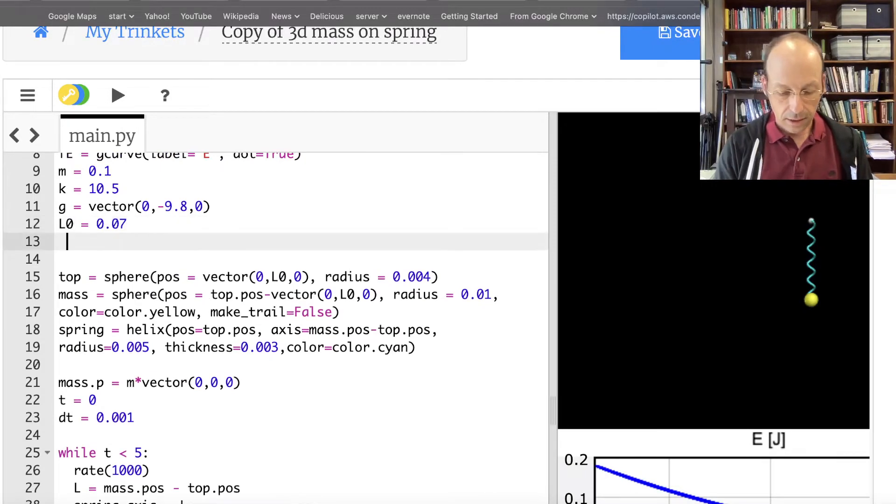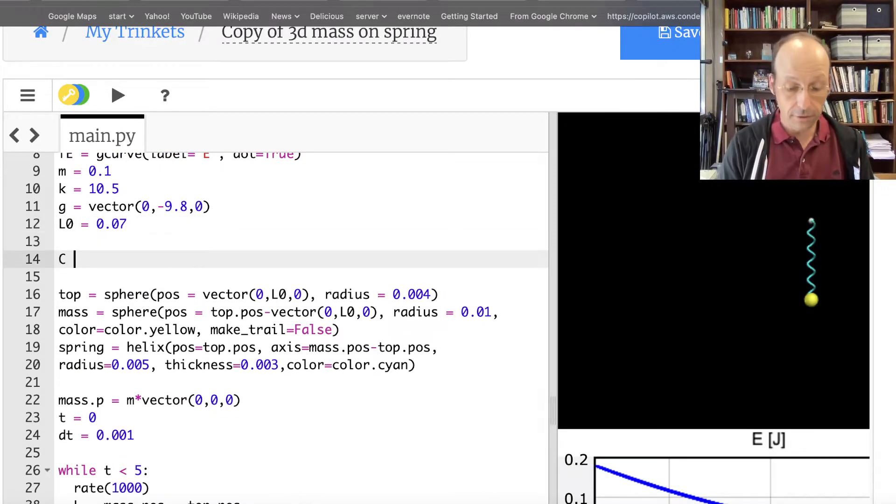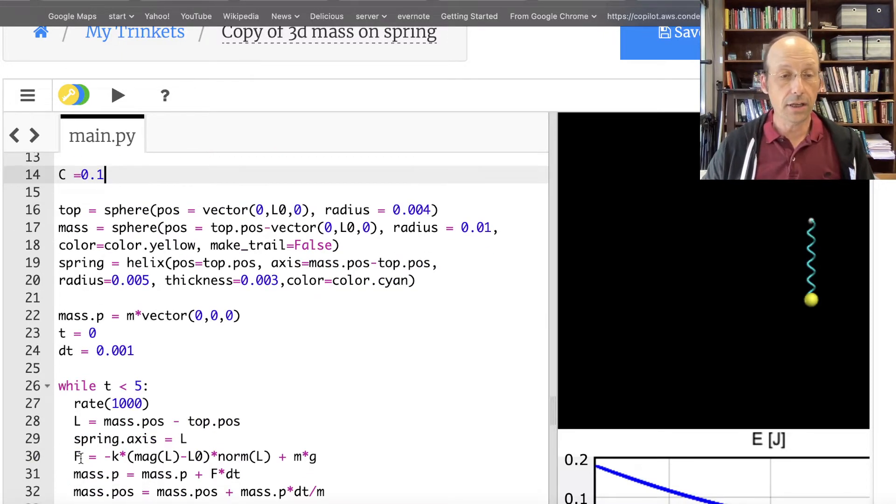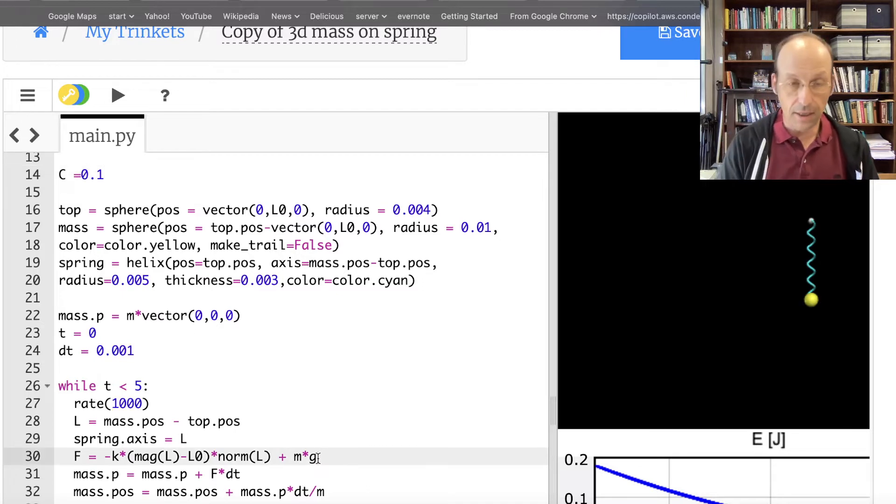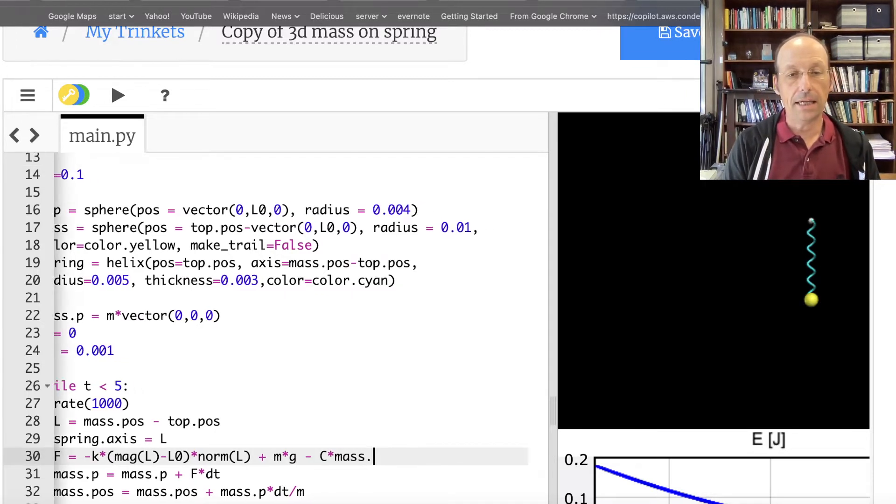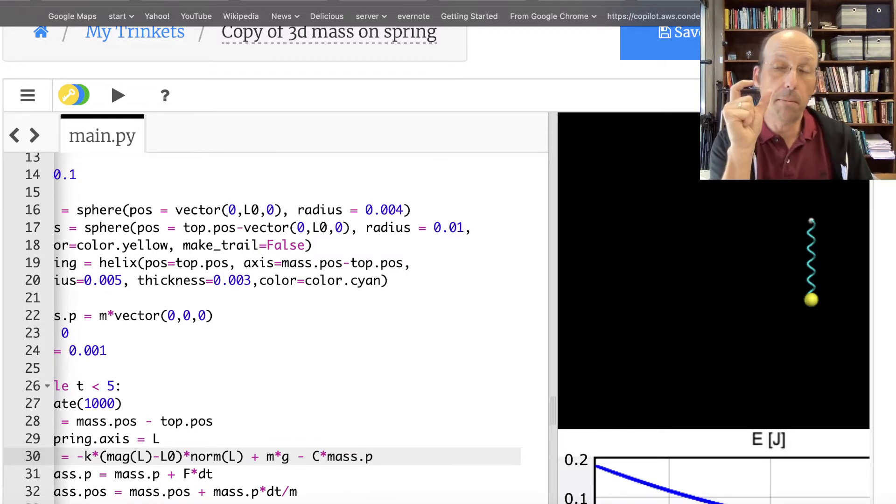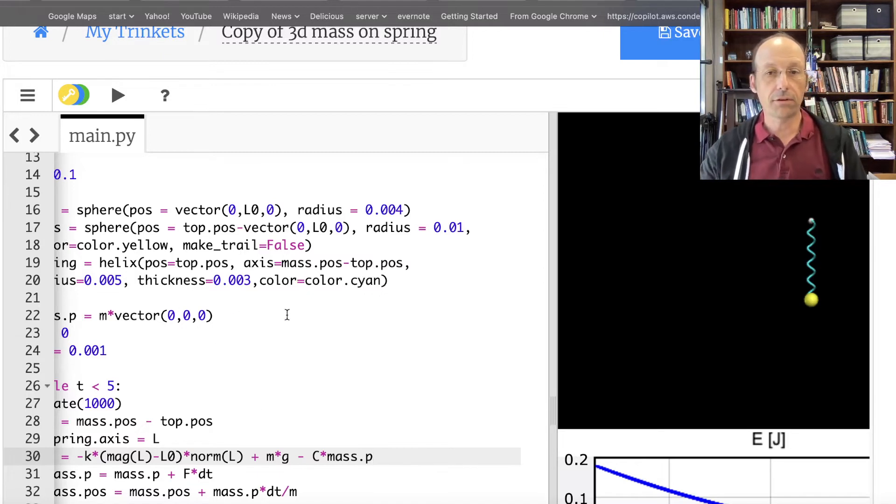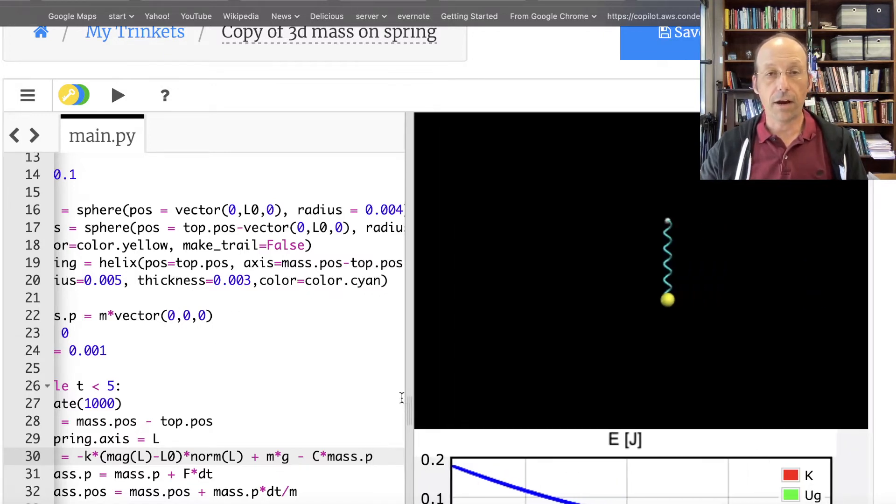So up here I'm going to say some constant let's say I'm picking something I have no idea what the value should be I'm going to say C equals 0.1 Down here in my calculation I have the spring force the gravity and I'm just going to say minus C times mass dot P So there when the mass is at rest when the velocity is zero there's no drag force but if it's moving up the drag force is going to be down if it's moving down the drag force is going to be up.